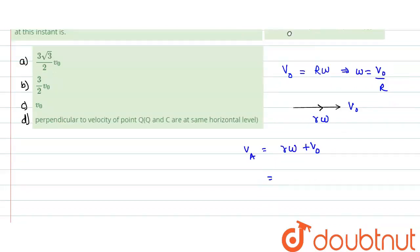The radial location of point A is capital R divided by 2. The ω value is v₀/R, so velocity of A is (R/2)(v₀/R) plus v₀. If you solve this, it would turn out to be 3v₀/2. This is the velocity of A.